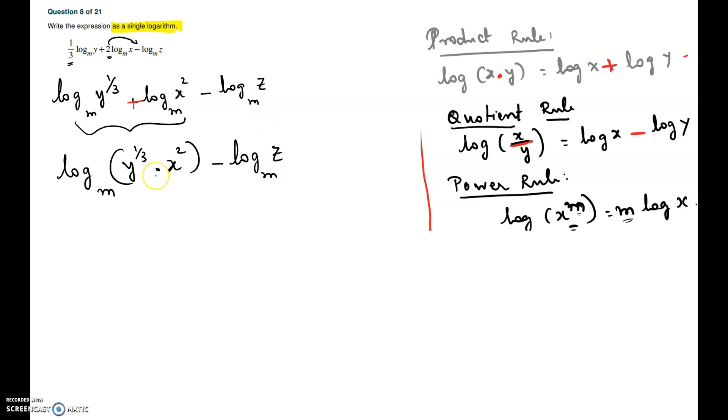Now we notice there are two logarithms and they are connected by minus. So we have to apply the quotient rule here. It is log of the first divided by the second argument, which is z. The base remains the same base. So it is log base m of y to the one third times x squared divided by z.